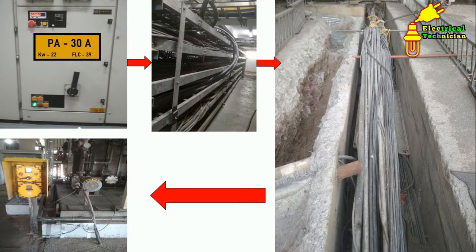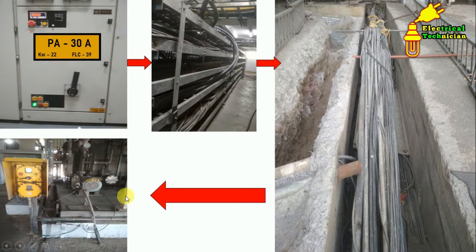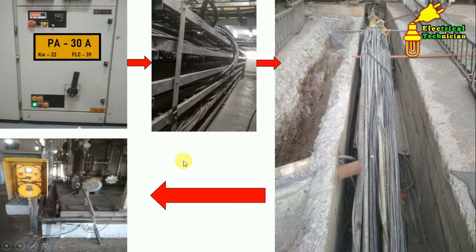What happened in our company — somehow this motor got tripped due to earth fault. A task was given to us to identify the reason this motor tripped. When we took the IR value, we came to know the core of the red phase is short with the earth — somehow connected to earth. This is why the motor tripped due to earth fault.